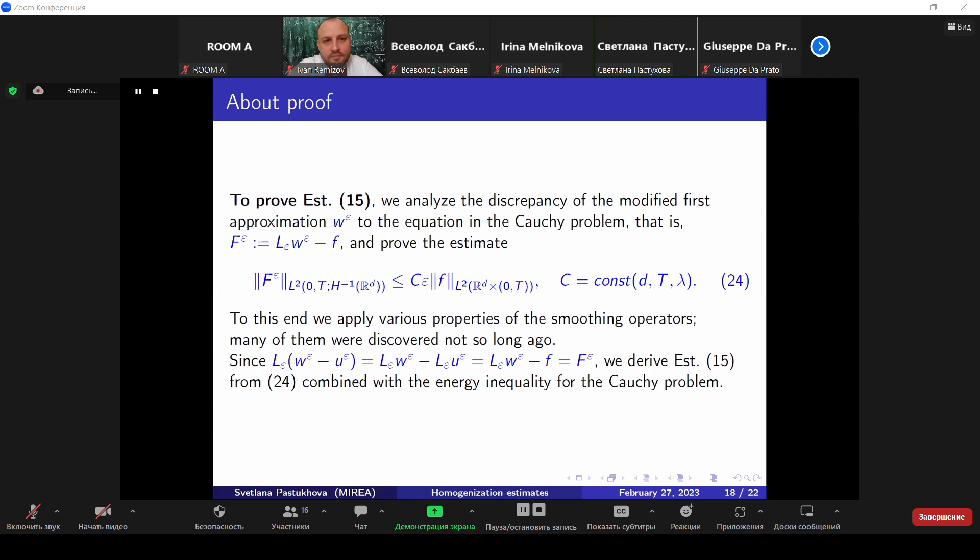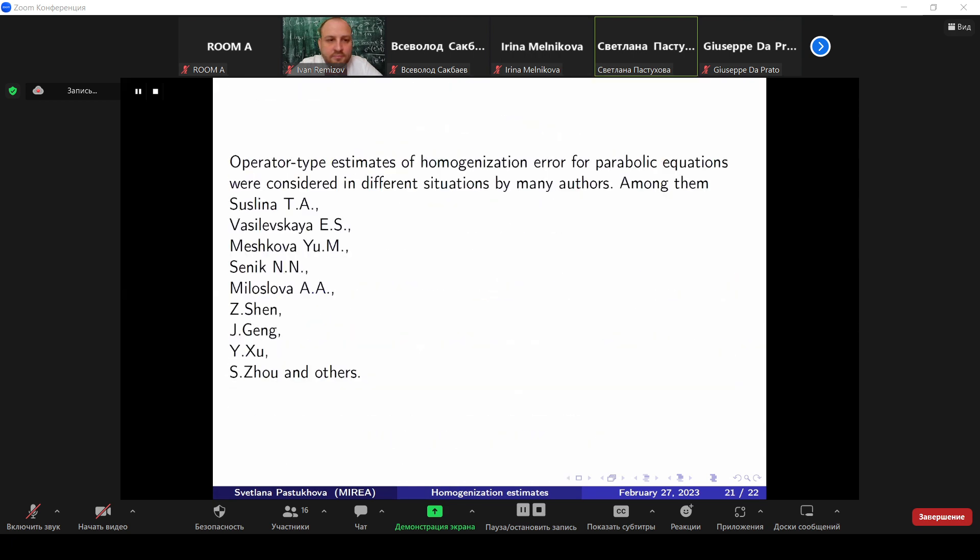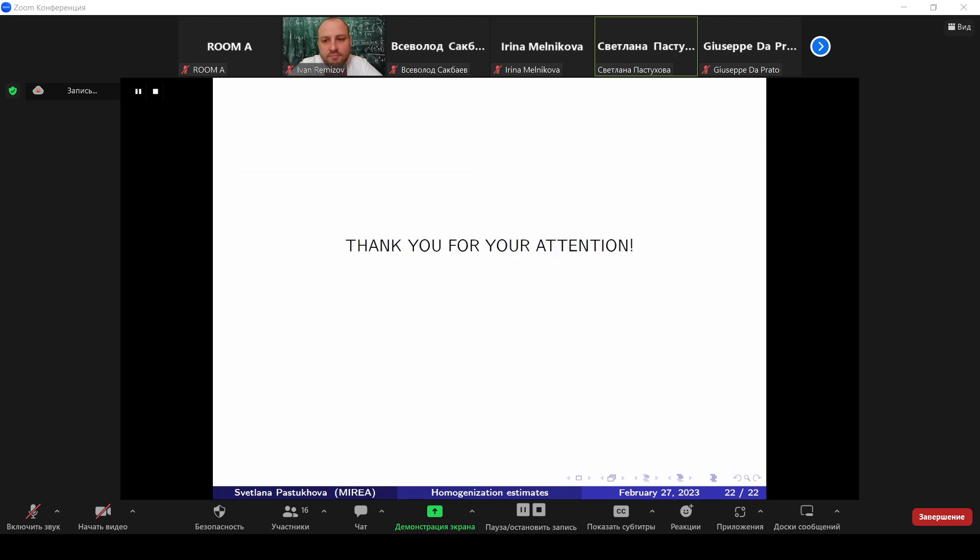Now, I have no time for discussion of details of proof. In conclusion, I show you the last slide where I give the names of mathematicians who contributed to this direction, to this field of homogenization theory, operator type estimates. You see here the names of mathematicians from St. Petersburg. And there are many Chinese mathematicians who are involved in this activity: Shen, Jiang, Xu, Zhou, and many others. So I thank you for your attention. To my mind, I have exhausted my time.